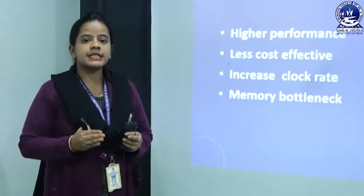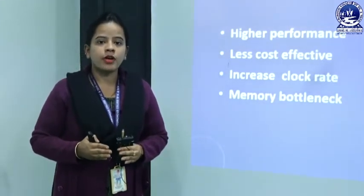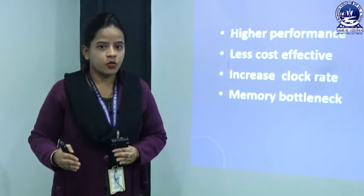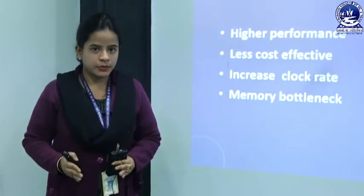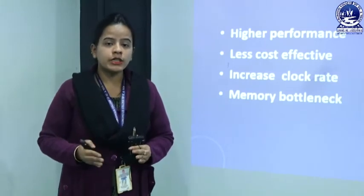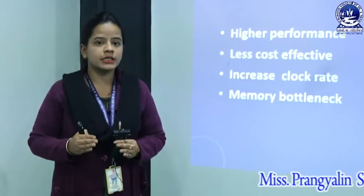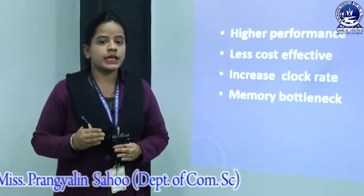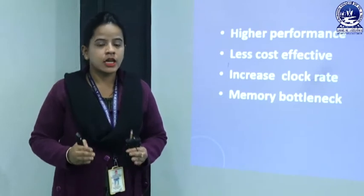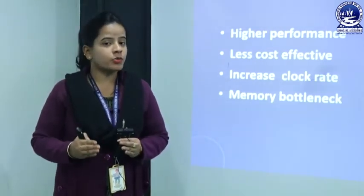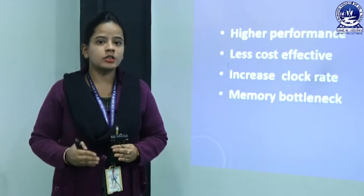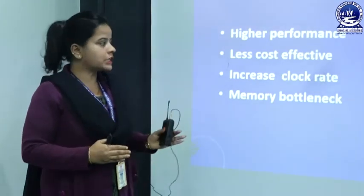Five-stage pipelining is less cost-effective because it uses multiple hardware resources through which all jobs are executed efficiently in less time, making it more costly compared to three-stage. Another difference is the increased clock rate. In three-stage pipelining, every instruction must be executed in only one clock cycle. When executing complex applications, conflicts can occur between hardware interfaces. Five-stage pipelining provides the facility to execute individual instructions by increasing the clock time period, thus increasing the clock rate.